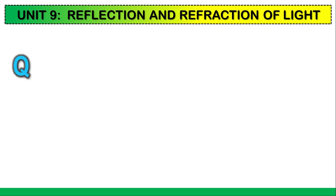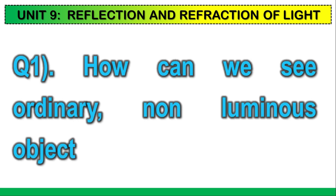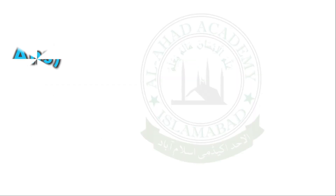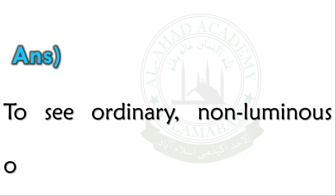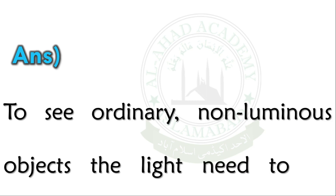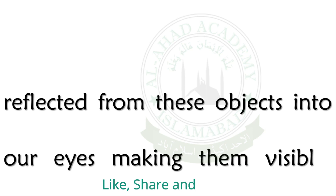Reflection and refraction of light. Question number one: how can we see ordinary non-luminous objects? To see ordinary non-luminous objects, the light needs to be reflected from these objects into our eyes, making them visible.